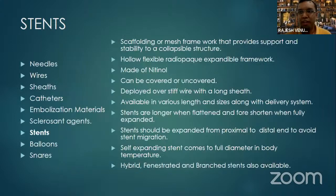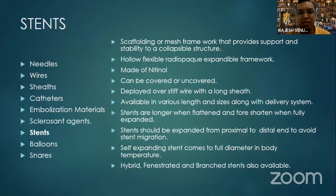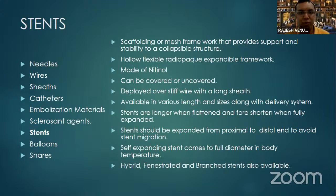A stent is nothing but a scaffolding or mesh framework that provides support and stability to a collapsible structure. The term 'stent' is relatively new — it came into use with the development of interventional radiology. Stents are hollow, flexible, radiopaque tubes of expandable framework, usually made of nitinol — a nickel-titanium hybrid alloy. There are two types used in vascular IR: covered and uncovered. If the metal framework is covered by a fabric, it is called a covered stent; if not, it is called a bare metal stent.